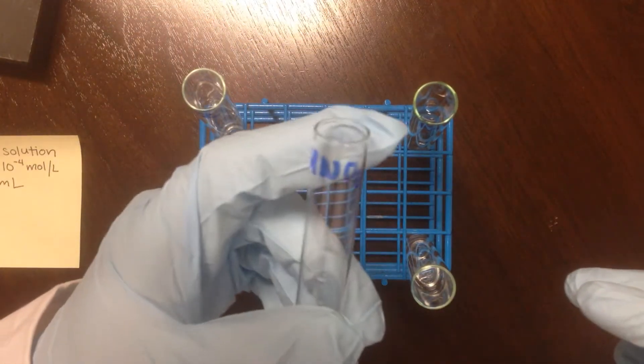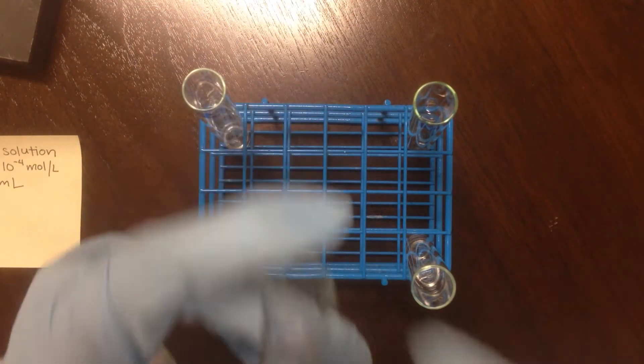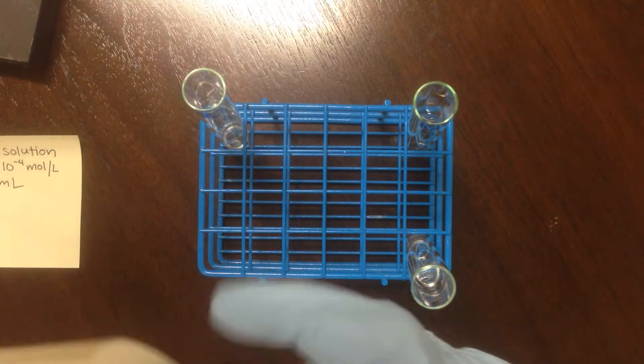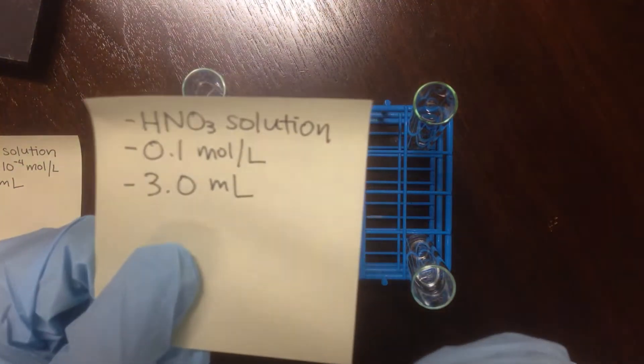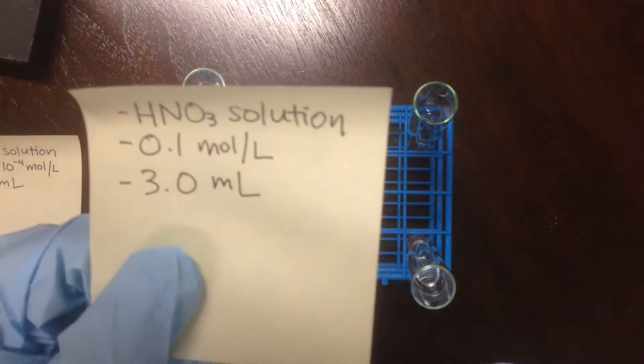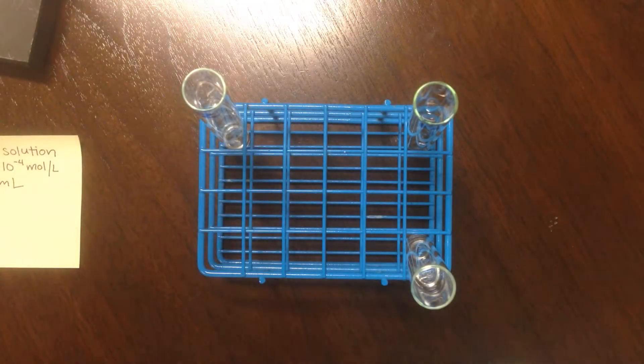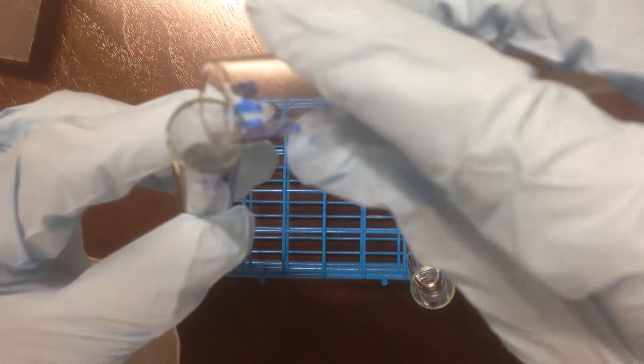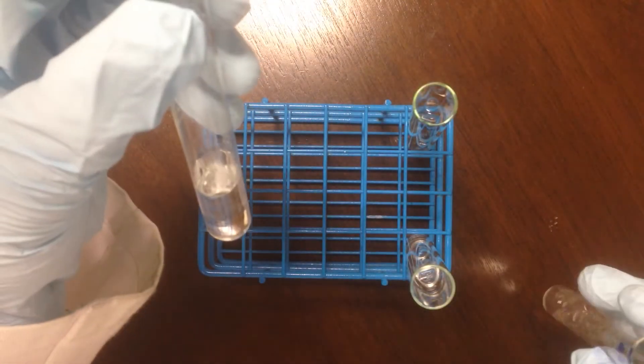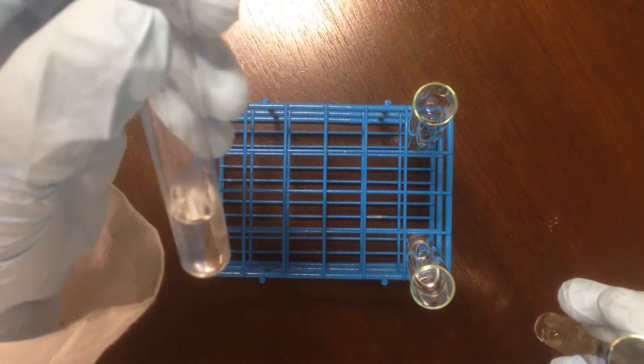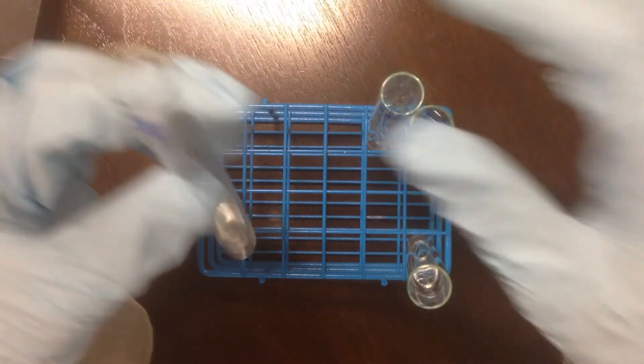Next is the nitric acid solution, HNO₃. This is the stock nitric acid that you'll use in lab, and it is 0.1 moles per liter. This tube contains 3 milliliters of the nitric. When I add this in, no real color change yet. It's still for the most part colorless, maybe a little bit of pale yellow there.